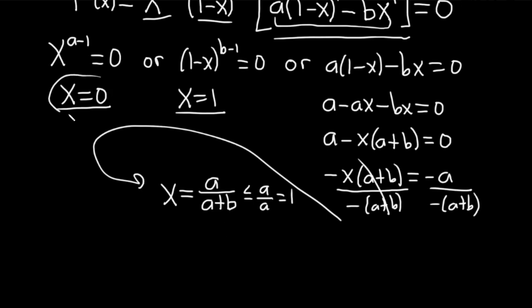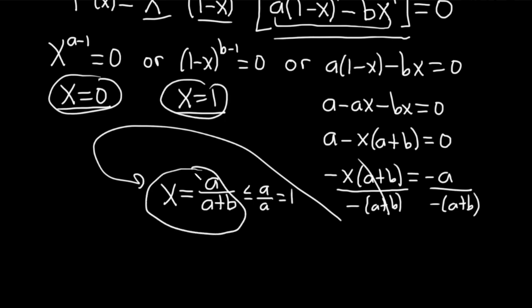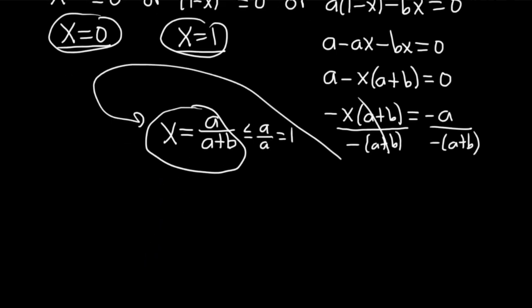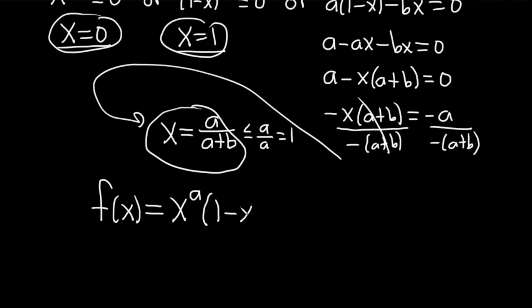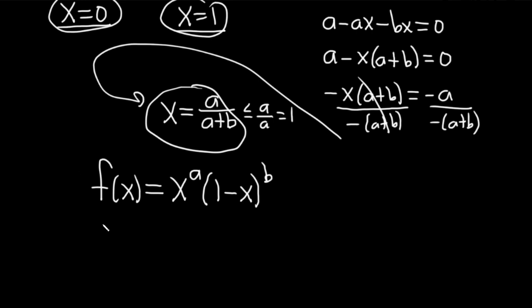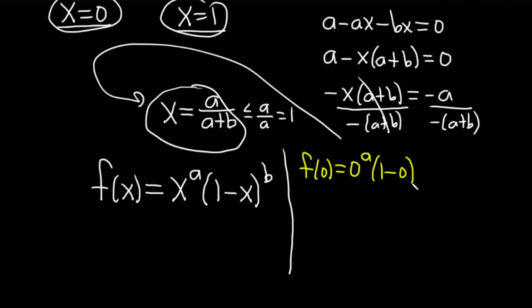Now we plug each value into the original function f(x) = x^a times (1 minus x)^b. Plugging in 0: f(0) = 0^a times (1 minus 0)^b = 0 times 1 = 0.